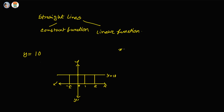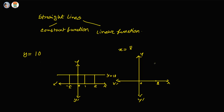Similarly, if we have x equal to 8 — how to draw this? Again, we need a four-quadrant diagram. This is the y-axis or the vertical axis, and this is the x-axis or the horizontal axis. For this x equal to 8 function, we have a straight line which will go through the point 8.